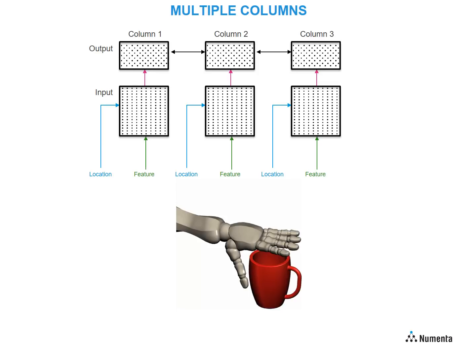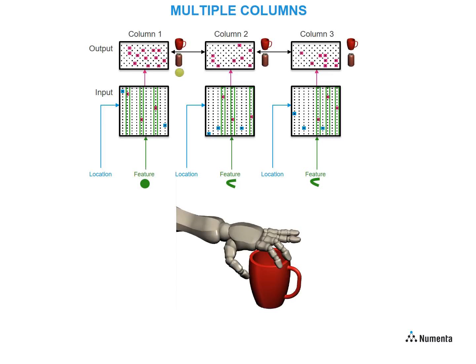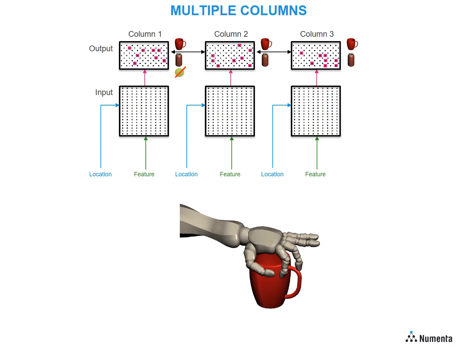Now let's look at what happens when multiple fingers and multiple cortical columns are involved — in this case, three. With the first grasp, the thumb and first two fingers touch the cup. Each column receives a unique location signal and sensory input corresponding to each finger. The output layer of each column is individually trying to guess the object based on that feature-location pair. But because of the lateral connections between the columns, the three columns settle on a representation that is consistent across all three. In this case, the can and cup are still valid hypotheses, but the ball is eliminated. Now it does a second grasp, and again the columns arrive at a stable representation — here it knows that it must be the cup.